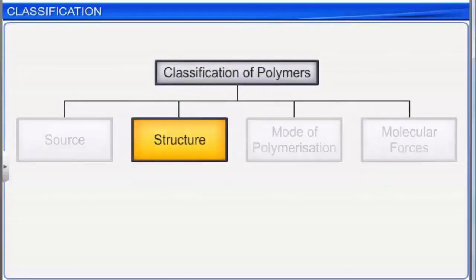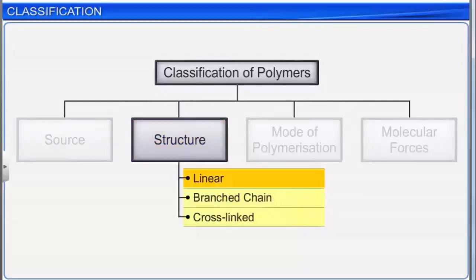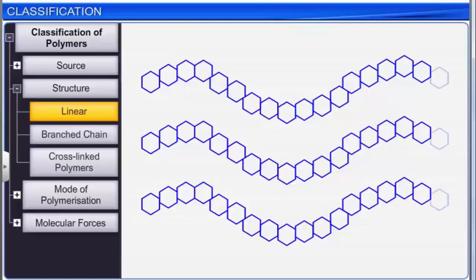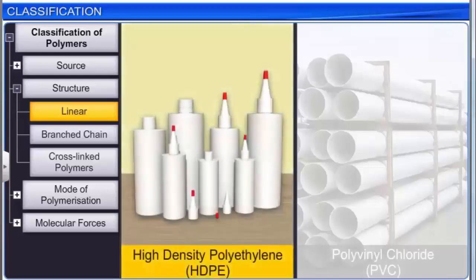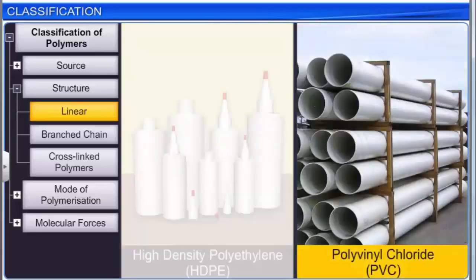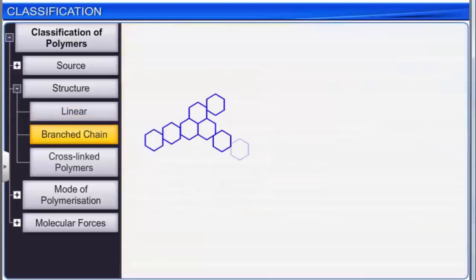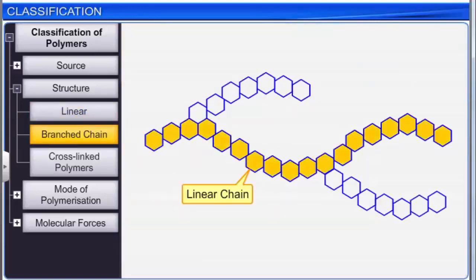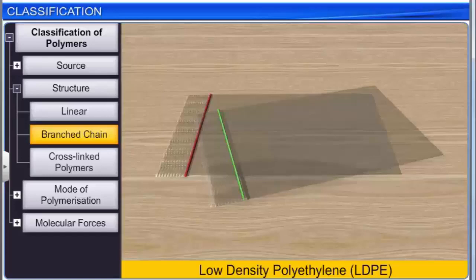On the basis of their structure, polymers are classified into three types: linear, branched chain, and cross-linked polymers. Linear polymers are made from long straight chains. Examples are high-density polyethylene (HDPE) and polyvinyl chloride (PVC). Branched chain polymers contain linear chains that have some branches. One common example is low-density polyethylene (LDPE).